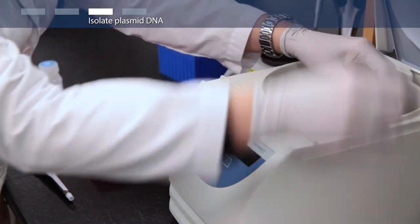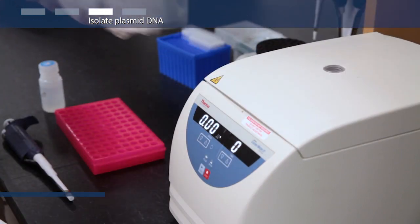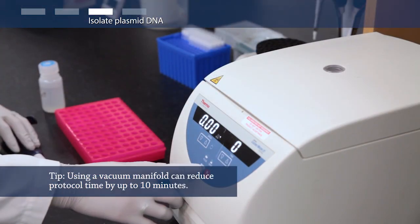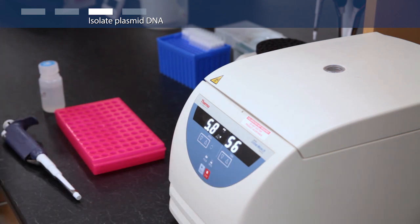Repeat the wash procedure using another 500 microliters of wash solution. Remove any residual wash solution by discarding the flow-through and centrifuging the empty column for an additional minute.